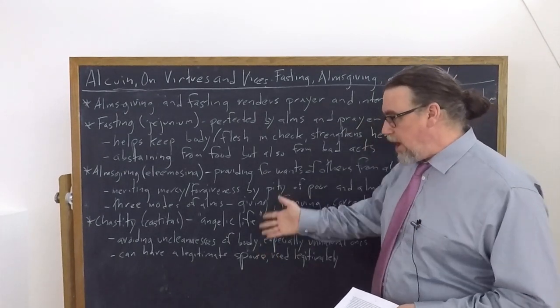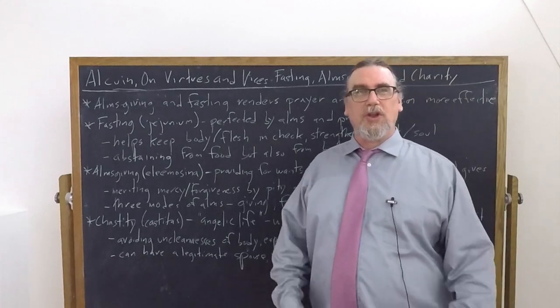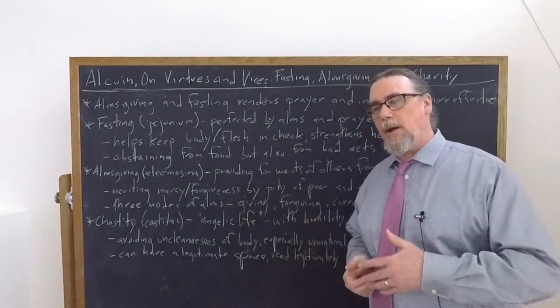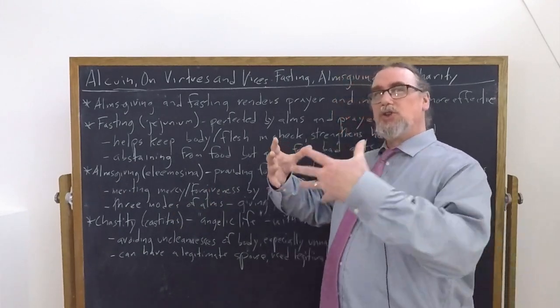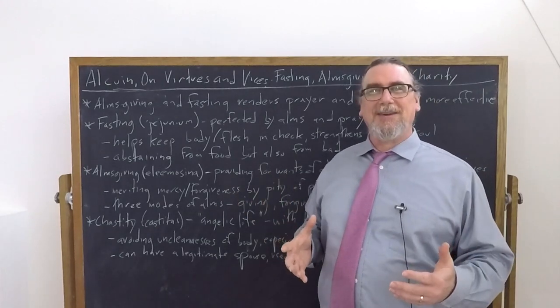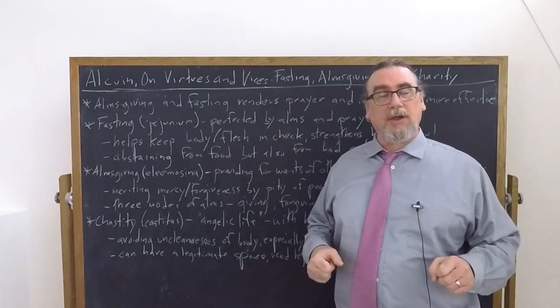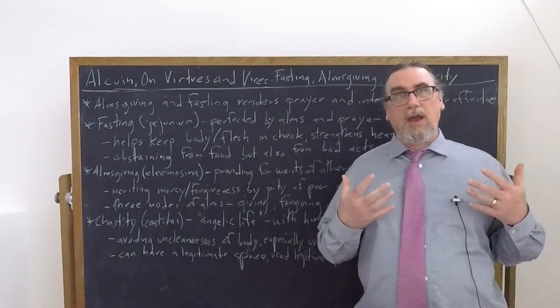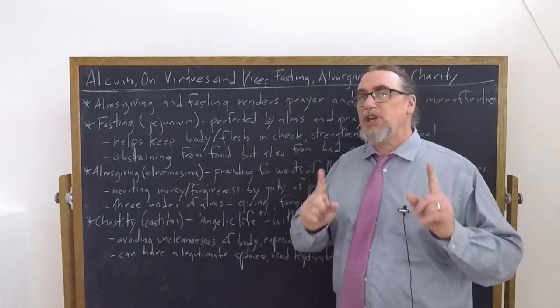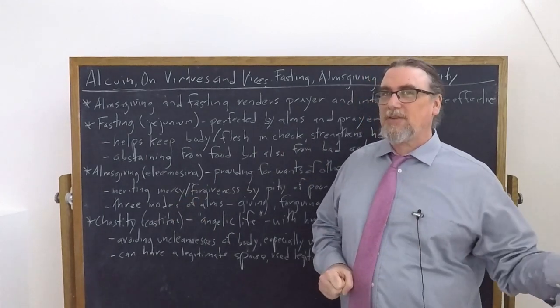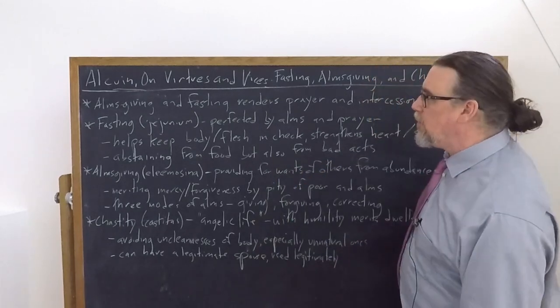He says you can have a legitimate spouse and that legitimate spouse can be chaste. Now he's actually talking about a man can have a wife because he's writing as a monk to a male correspondent, but we could easily make this reciprocal and extend it both ways. It's possible for a married couple from Alcuin's point of view to have chastity. It doesn't mean virginity. It doesn't mean never having sex. It means using our desires and pleasures and bodies in the right way.